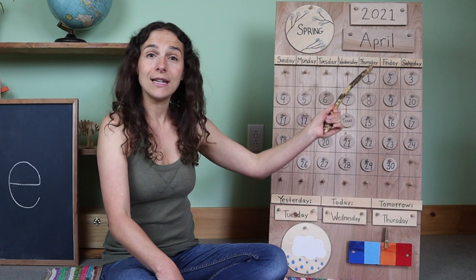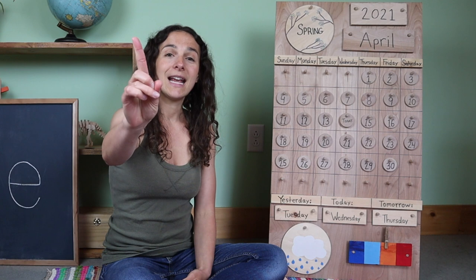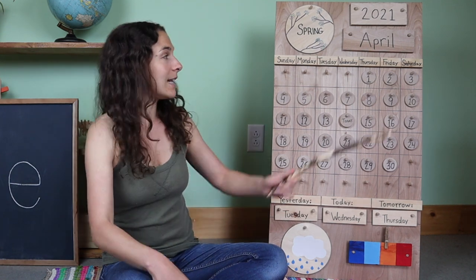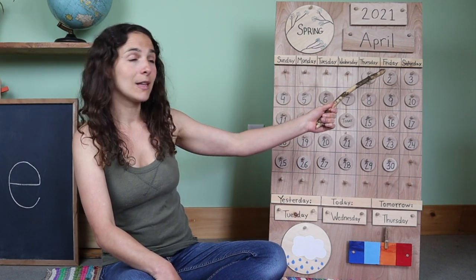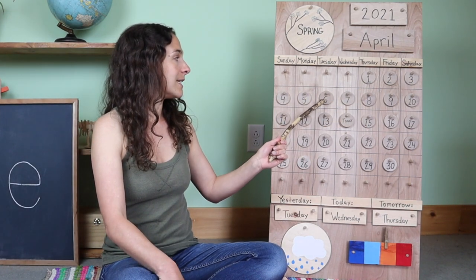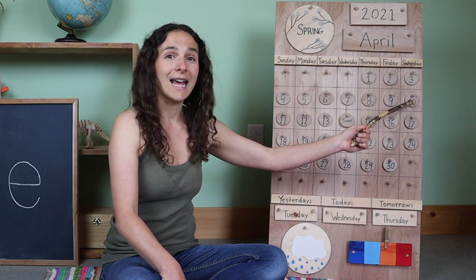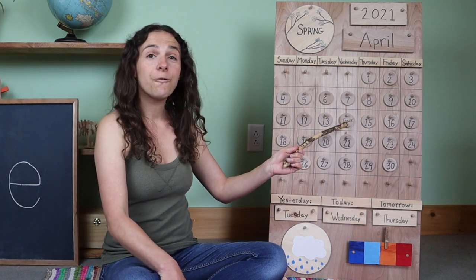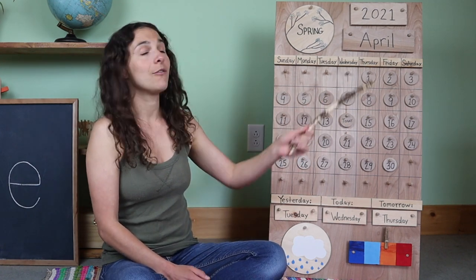Now we need to count all the days we've had so far in the month of April. Get those counting fingers ready and give them a little stretch to warm them up. Let's start off with the number one at the top: one, two, three, four, five, six, seven, eight, nine, ten, eleven, twelve, thirteen, fourteen. We have had 14 days so far in the month of April.